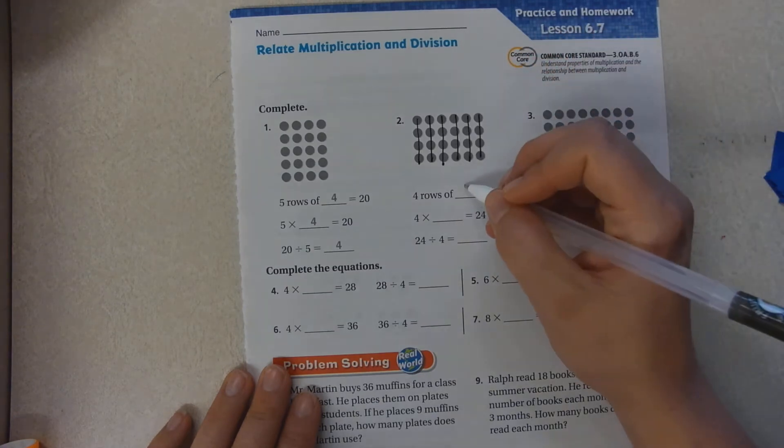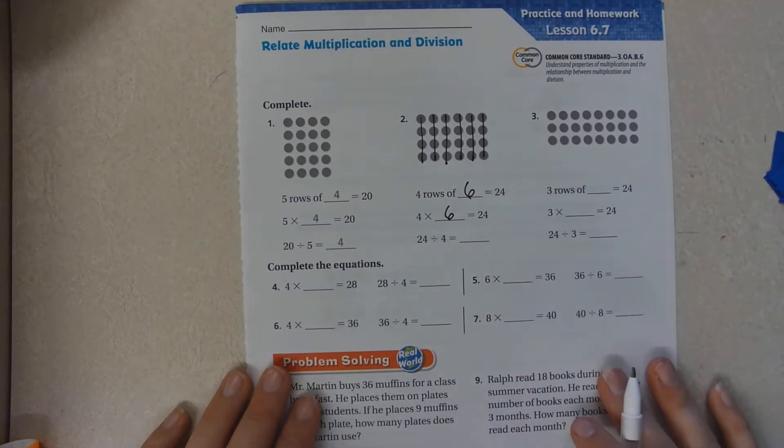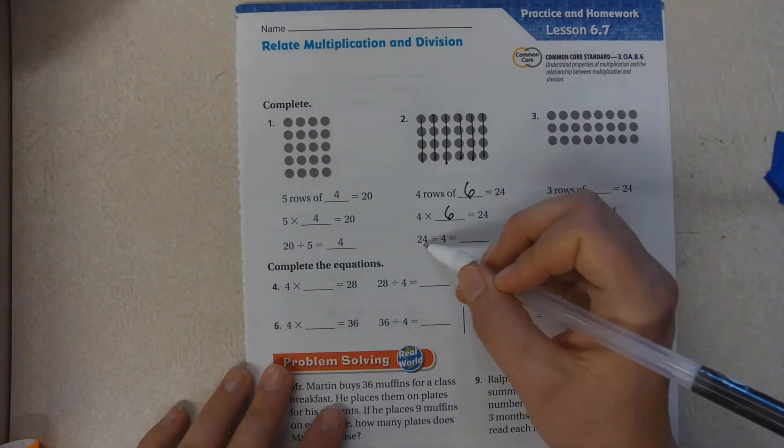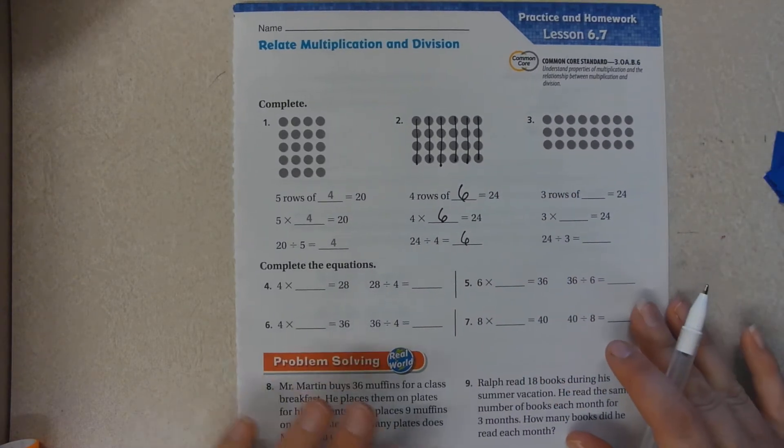5, 6. 4 times 6 equals 24, or 24 divided by 4 is 6. This is like a fact family.